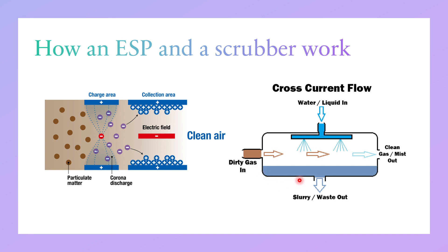Similarly, a scrubber is also an important device which helps in cleaning the dirty gases released from industries. A scrubber is a treatment device in which a gas stream is brought into intensive contact with a liquid. The water absorbs the contaminants and the clean, pollution-free gas is released from the other side. In this way, scrubbers allow air pollution to be reduced.